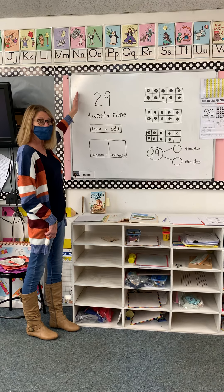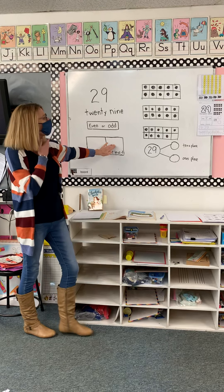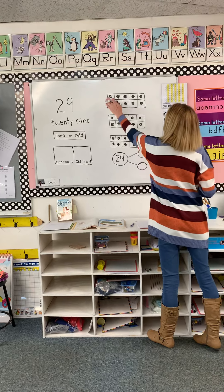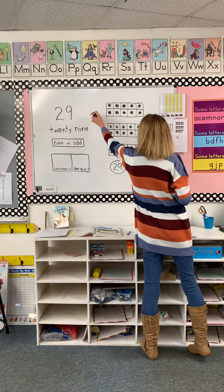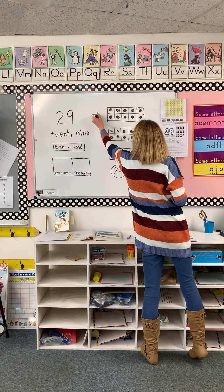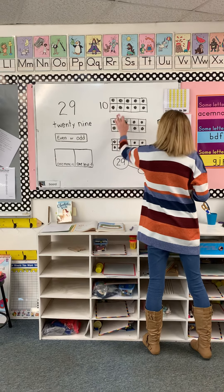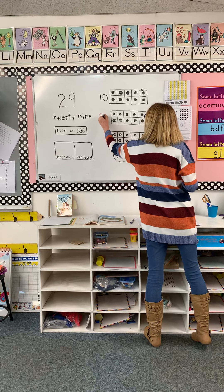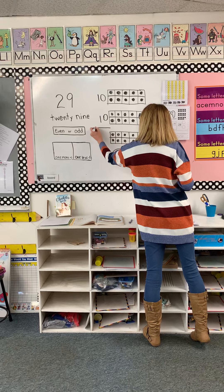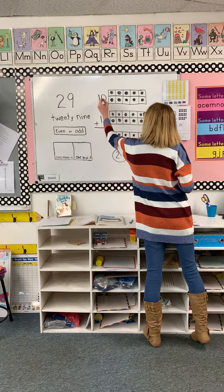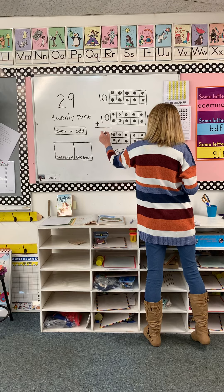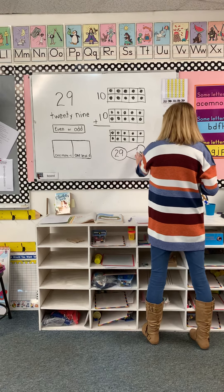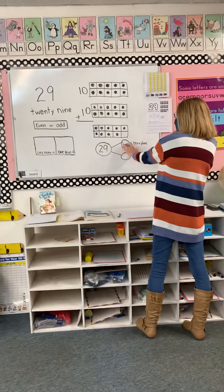See where you end up on your numbers chart, and that is the number that you will put in here. We've been reviewing our 10 frames, and we now know that if a 10 frame is completely full, its value is 10. So here we have one completed 10 frame. We have another completed 10 frame, and we've been working on adding those together. See what you come up with, and that is the number that you're going to put in the tens place.